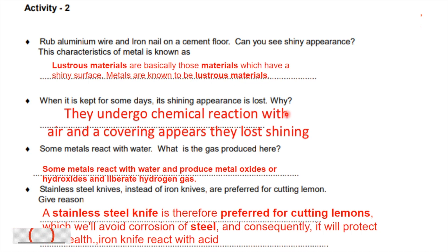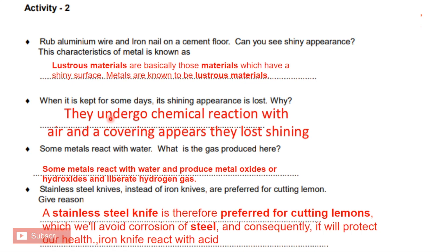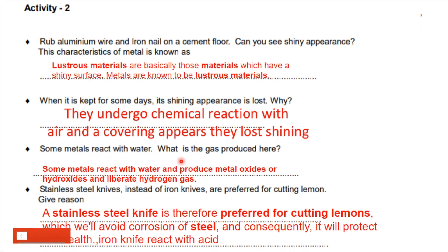If we use certain metals, some metals react with water and water gas is produced. For certain metals, water turns white. This gas produced is hydrogen gas.